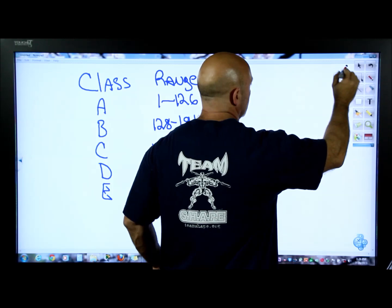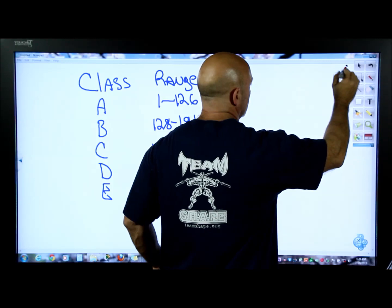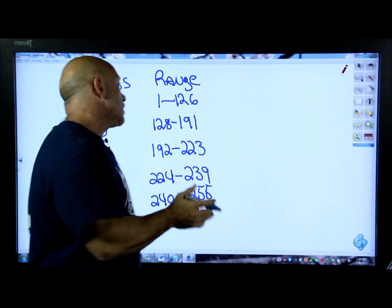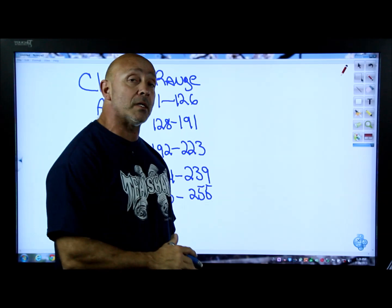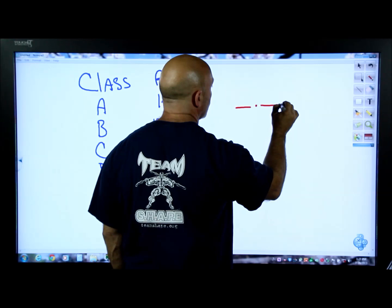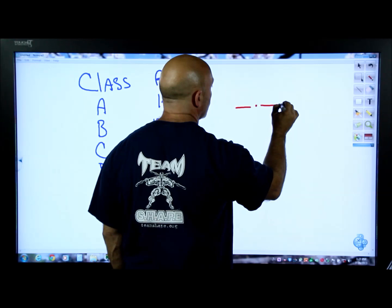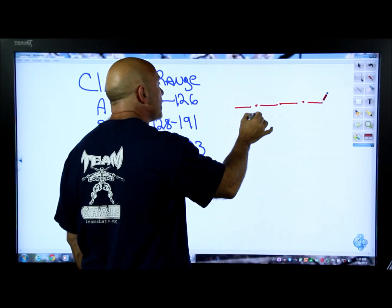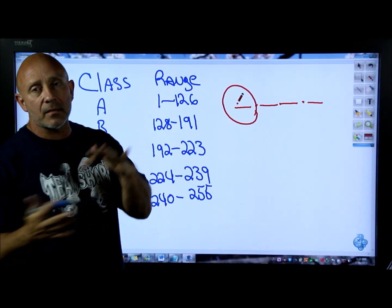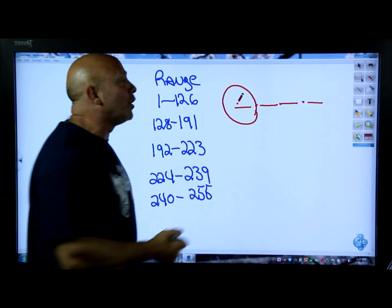For Class A, we don't use zero. Some books say the range is 0 to 127, but you have to remove zero and 127 because they're reserved addresses, so the range is 1 through 126. When classifying an address, the octet we're interested in is the first octet. Whatever number falls there tells you whether it's Class A, B, or C - you're always looking at the first octet.